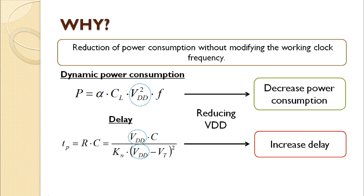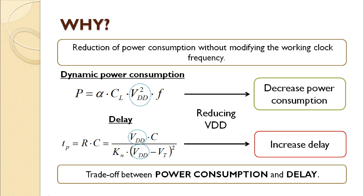So, we can conclude that there must be a trade-off between the power consumption and the delay. As we will explain later, it is important to take into account that this use of multiple VDD voltage will be applied only to the non-critical path of the combinational blocks — that is, all paths which have a lower delay than the critical path, which sets the highest delay and, consequently, the maximum clock frequency at which the circuit works. So, this delay must not be modified.